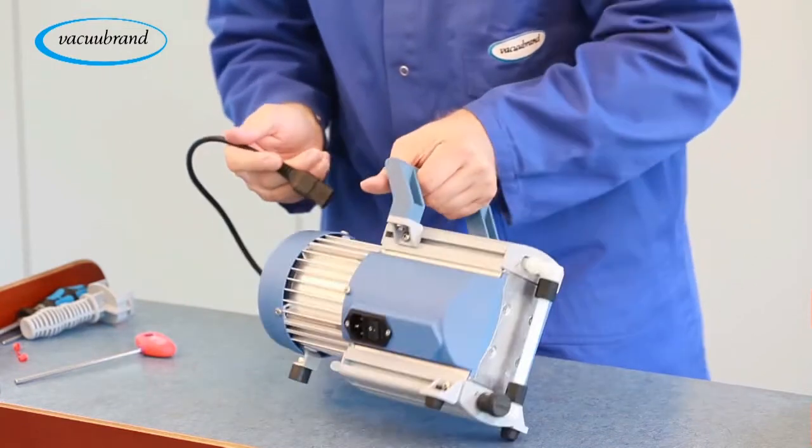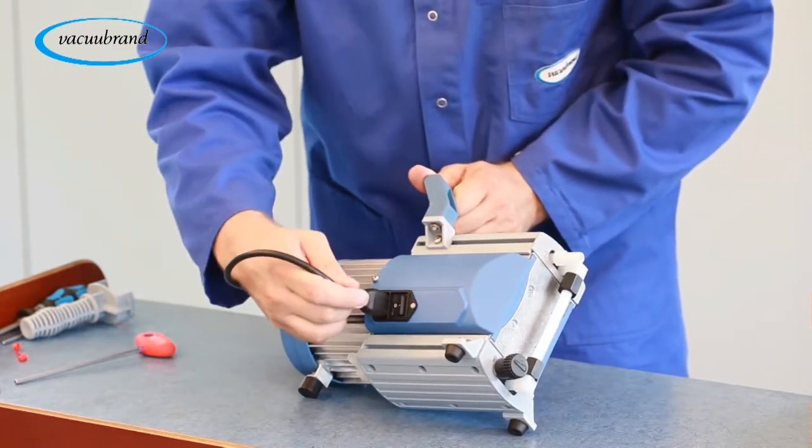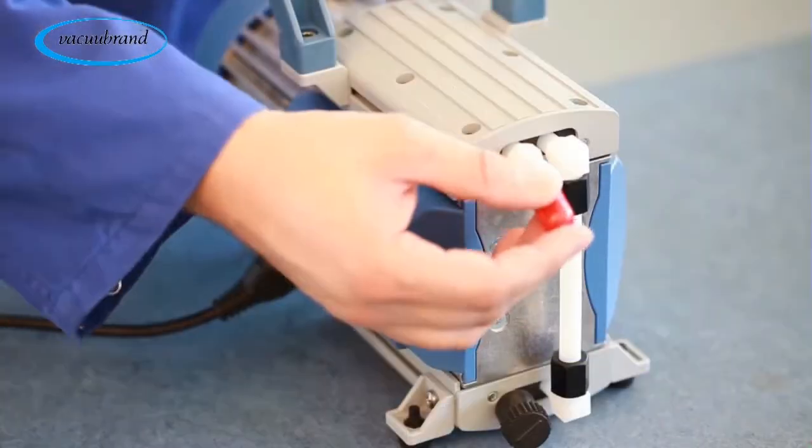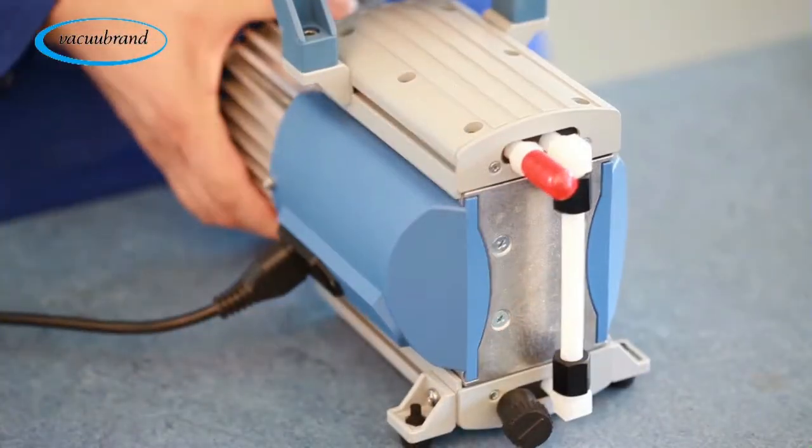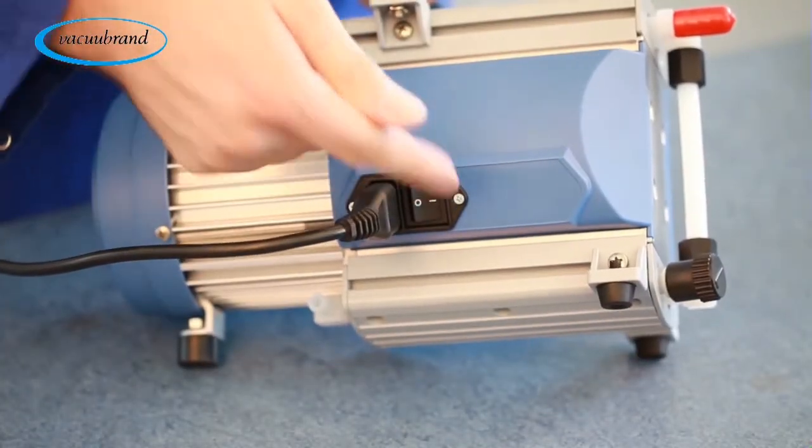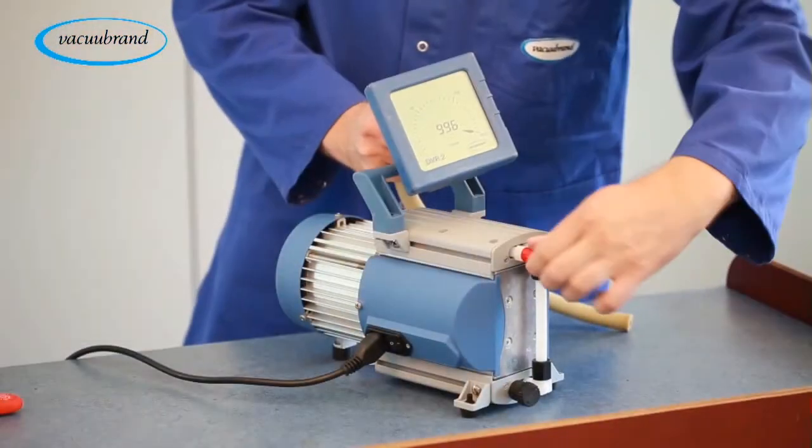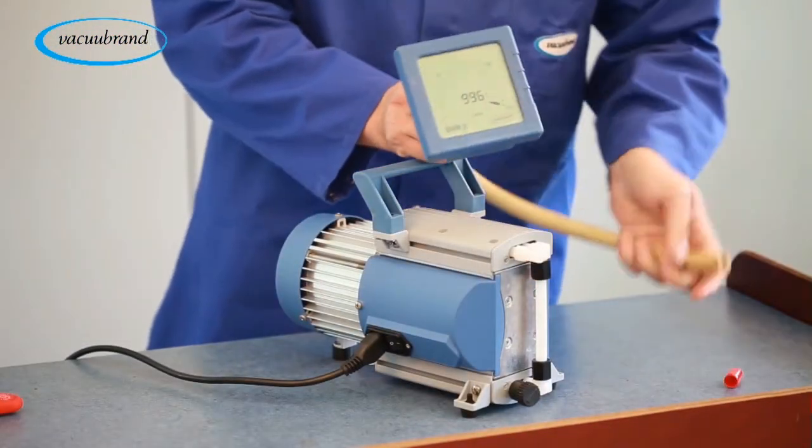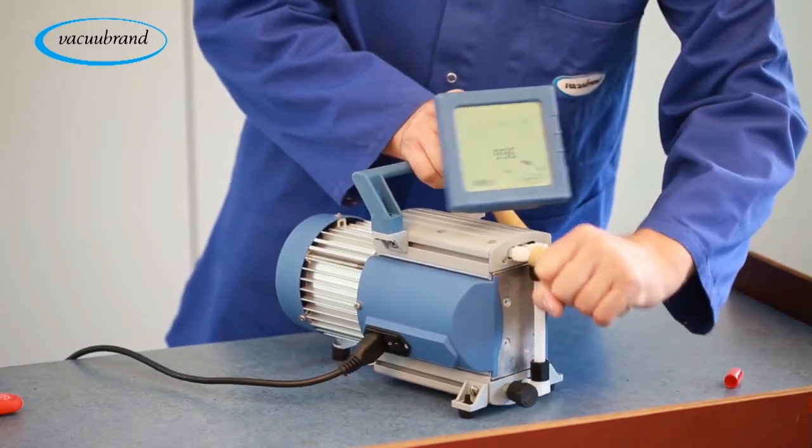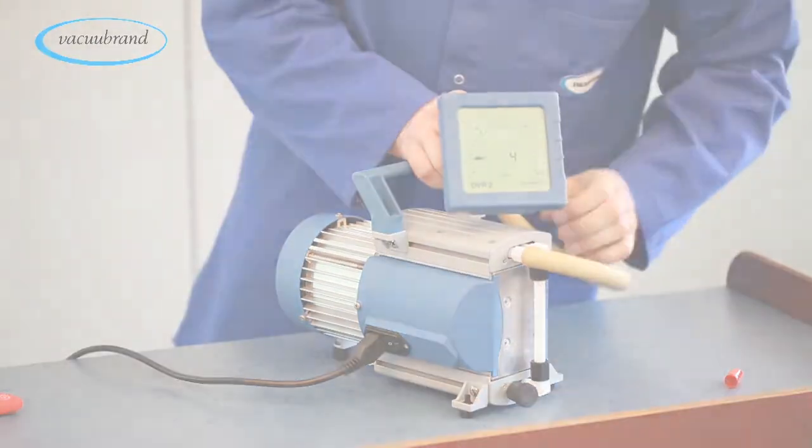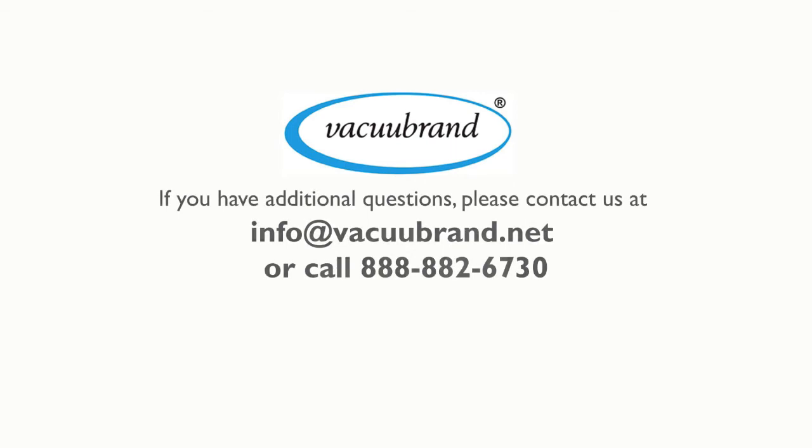Plug the unit back in. Cap the pump inlet and turn the pump on to make sure the pump starts properly. Be careful not to cap or block the exhaust outlet. Connect the vacuum gauge to ensure proper vacuum levels are met by the newly serviced pump. For more information on our vacuum pumps and other products, visit us at vacuubrand.com.